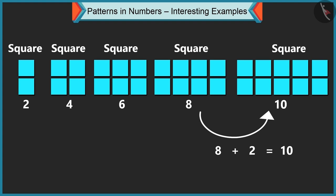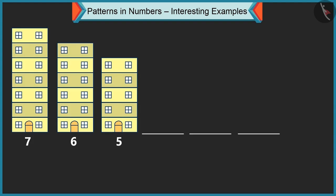Children, let us see another pattern. See, this pattern is made of buildings. Now tell me, how many floors are there in the first building? The first building has seven floors. And how many floors are there in the second building? The second building has six floors and the third building has five floors.